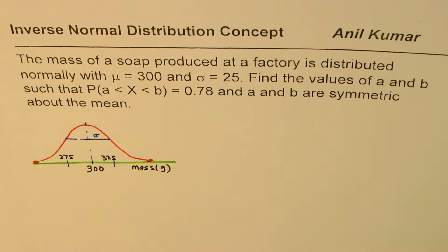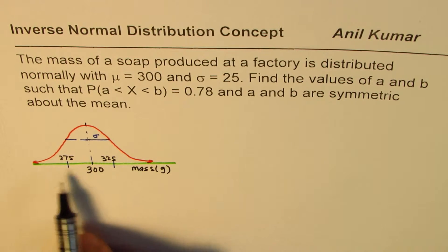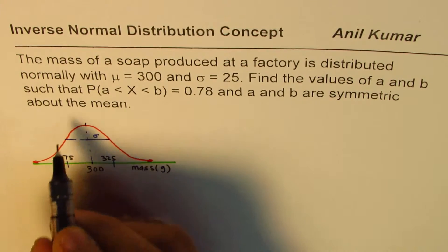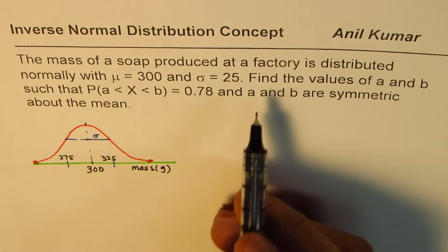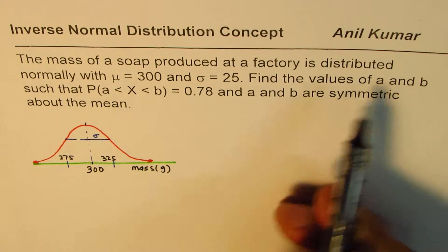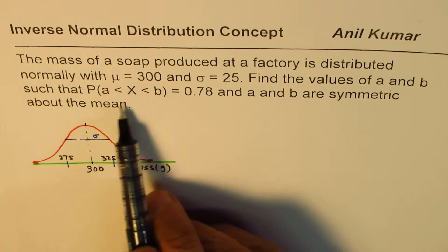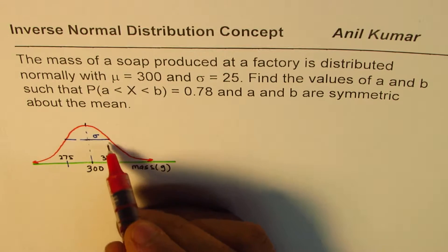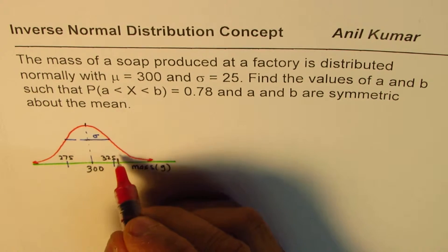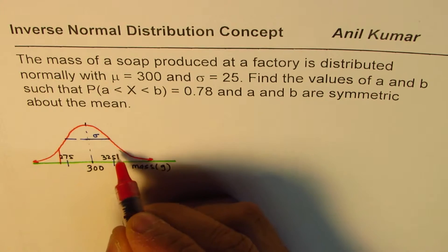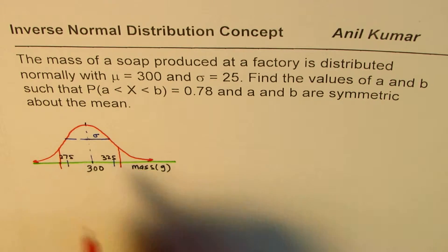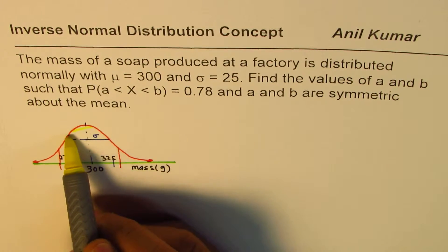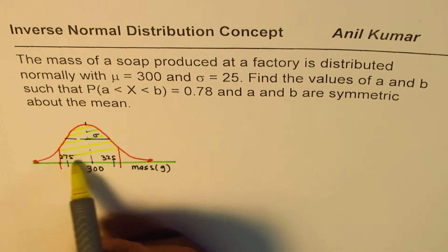The random variable takes the value of mass, which is a continuous function. Along the x-axis, the y-axis shows the probability density f(x), represented by this bell-shaped graph. The question asks us to find values of A and B such that the probability is 0.78. Within one standard deviation it is 68%, so 78% gives us a slightly wider central area, symmetric about the mean.